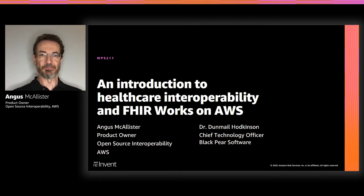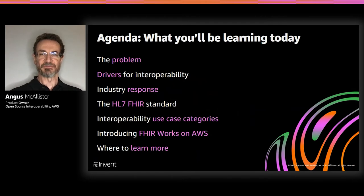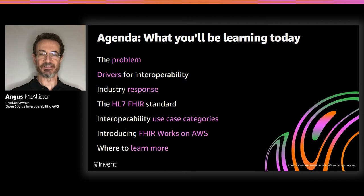Let's move on to our agenda. This is what you'll be learning today. First, the problem — what is the issue that requires interoperability? Second, what are some of the drivers for interoperability in terms of activity in the healthcare world? Thirdly, what is the industry doing about it? Fourth, the HL7 FHIR standard. Fifth, some use case categories for interoperability. Then I'll be introducing the FHIRworks on AWS toolkit, and finishing up with some pointers as to where you can learn more.